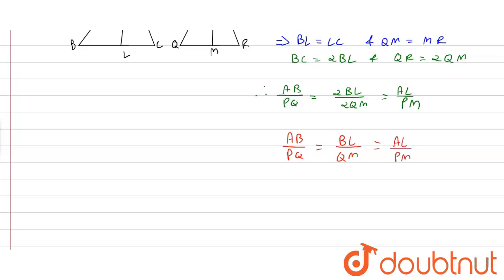So triangle ABC is similar to triangle PQM by SSS criteria for similarity, or we can write angle B is equal to angle Q by corresponding part of similar triangles.